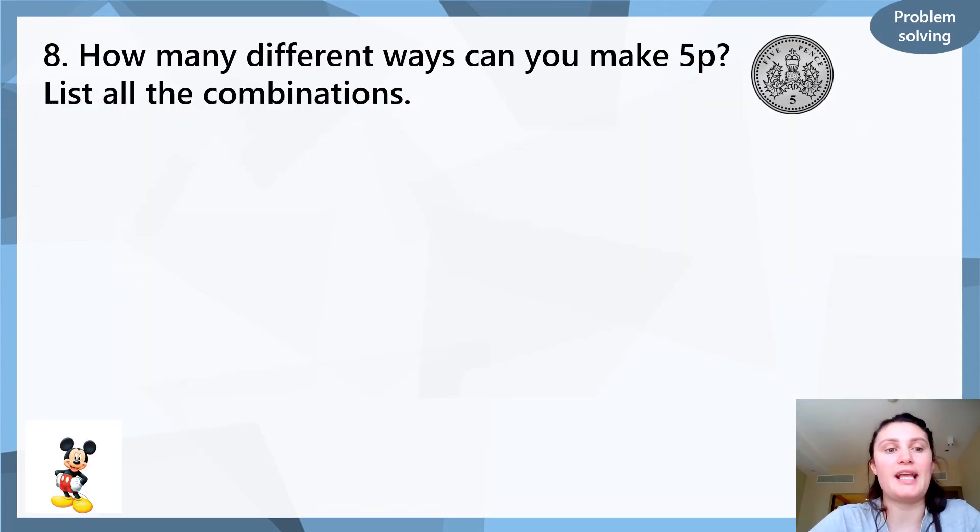Okay, question 8. How many different ways can you make 5p? So think about how you can make 5. Now remember, we need to use 1p coins, 2p coins and 5p coins. We can't use a 3p or a 4p because they don't exist. We only have 1p, 2p and 5p. So for question 8, I want you to think of all of the ways that you could make 5p using those coins. There's lots of different ways. See if you can think of all of them.